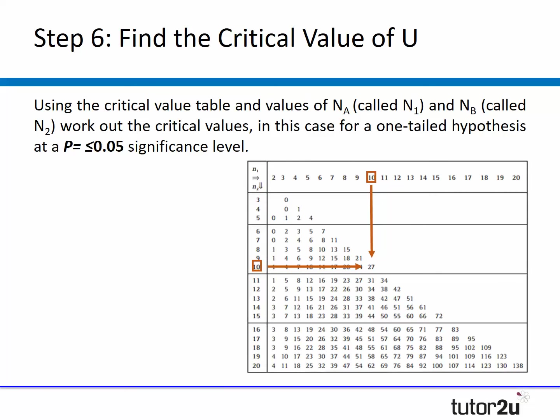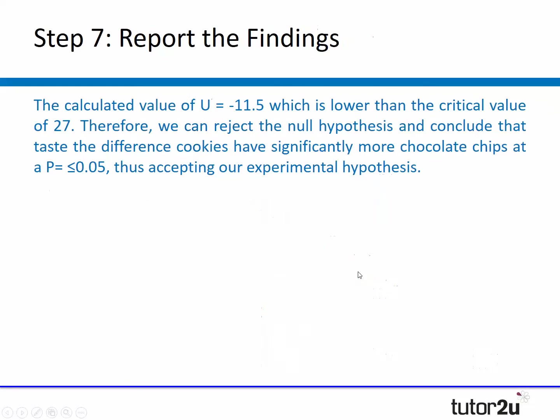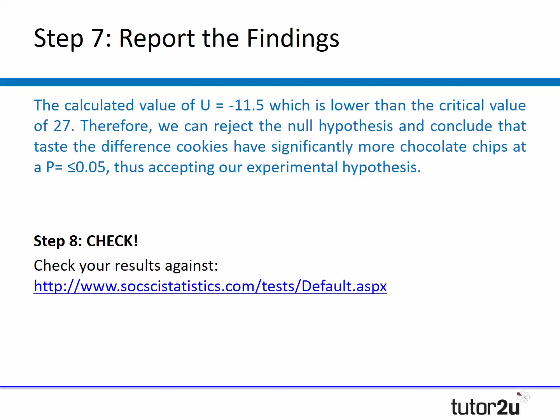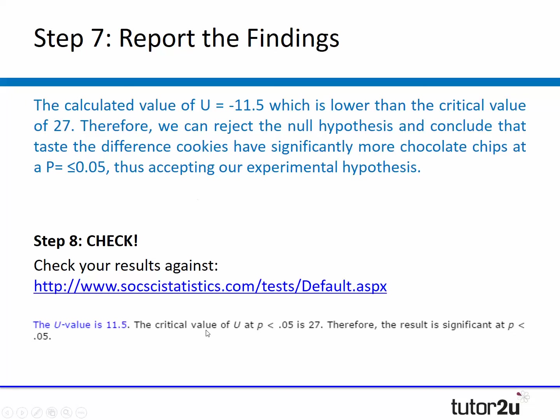Step six is finding the critical value using a critical values table — some tables call it N1 and N2, others N_A and N_B; it's the same thing. With 10 cookies in both groups, we find our critical value, which in this case is 27. There are websites where you can check your number by inputting the data for both groups; it confirms U = 11.5 and critical value = 27, so we've got it absolutely correct.